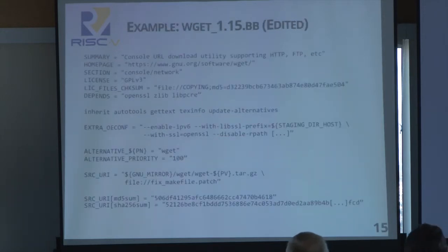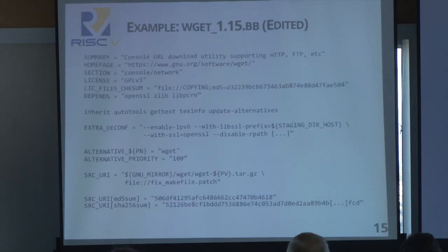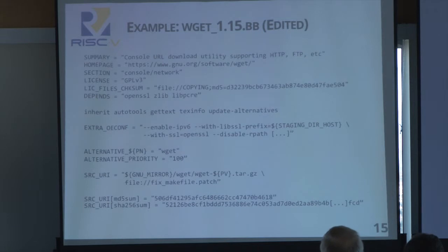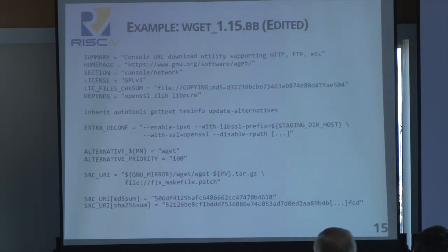To give you an idea of what these recipes look like, here is a very simple one for the wget utility. You have some metadata at the beginning such as the license or runtime dependencies. The 'inherit' line is where the magic happens — it imports Yocto functionality, and since wget is based on the normal autotools flow of configure, make, and make install, inheriting the autoconf functionality will just run those steps. The next line gives additional settings for the configure command. At the bottom, the source URI tells it where to download the sources — in this case the actual wget .tar.gz file and a patch file specific to Yocto — and there are checksums for robustness.